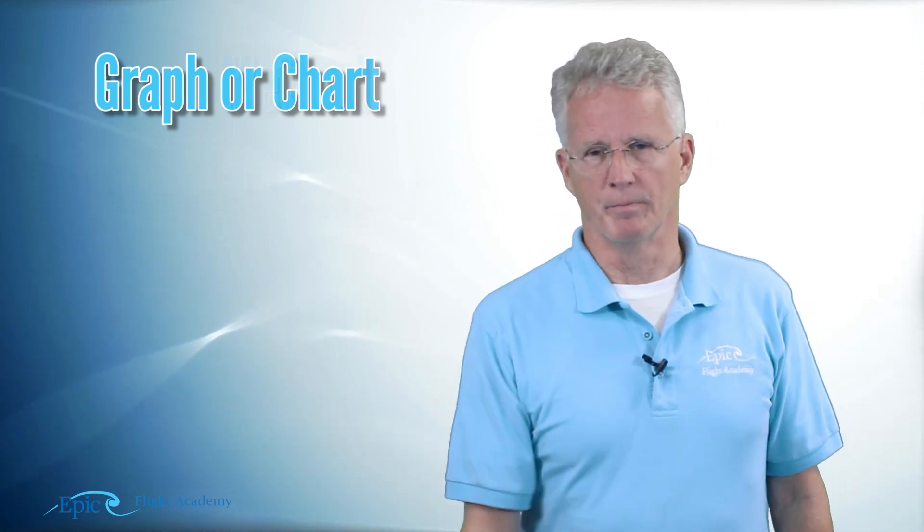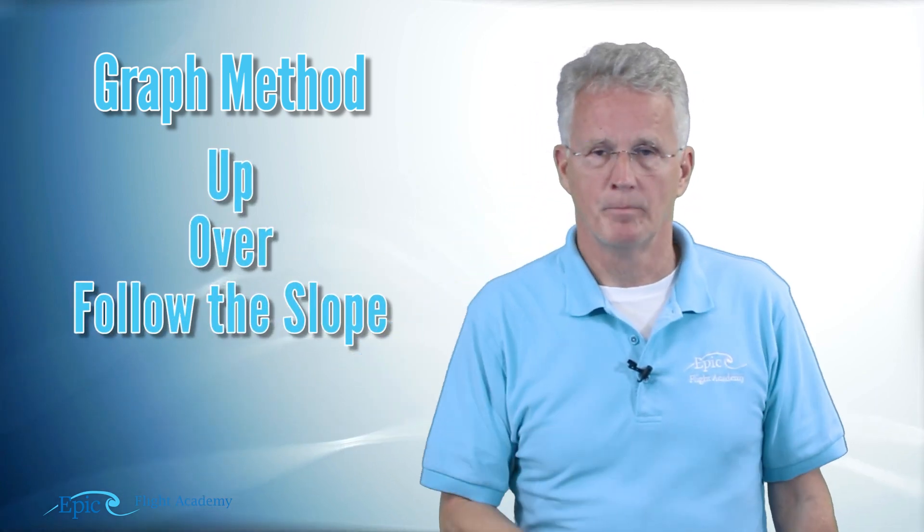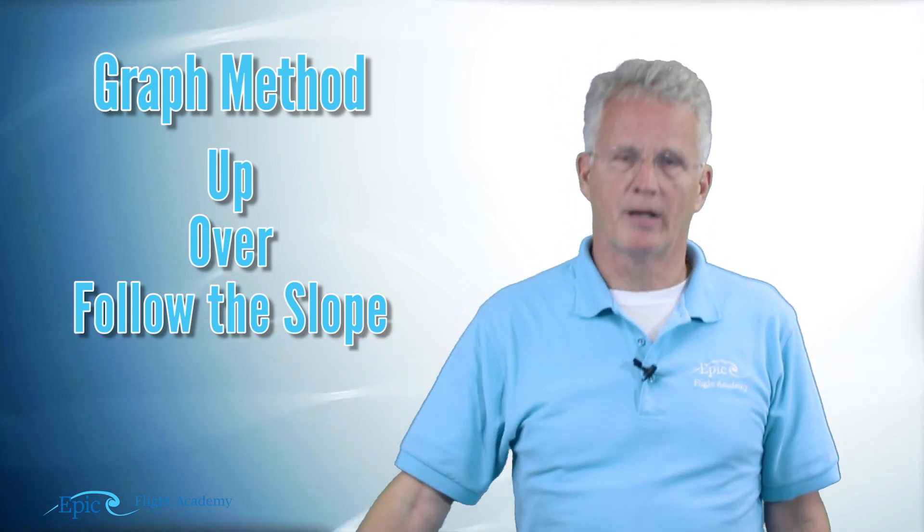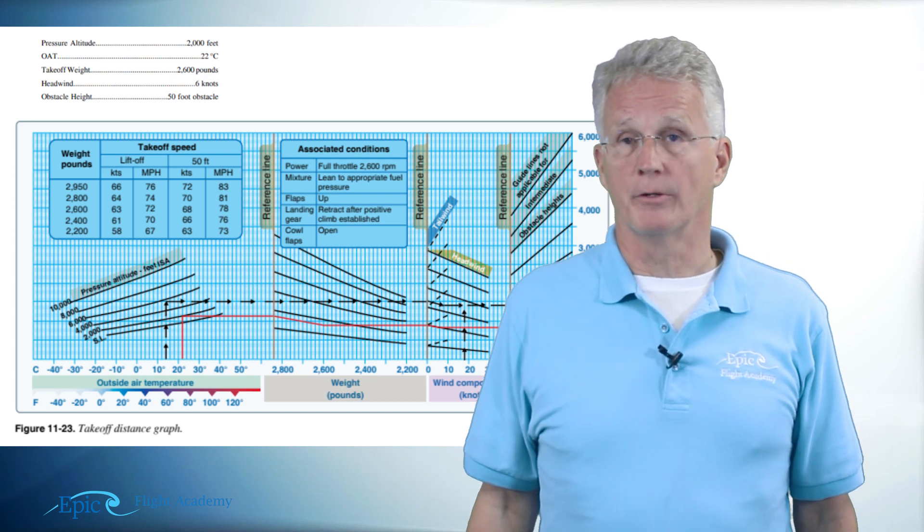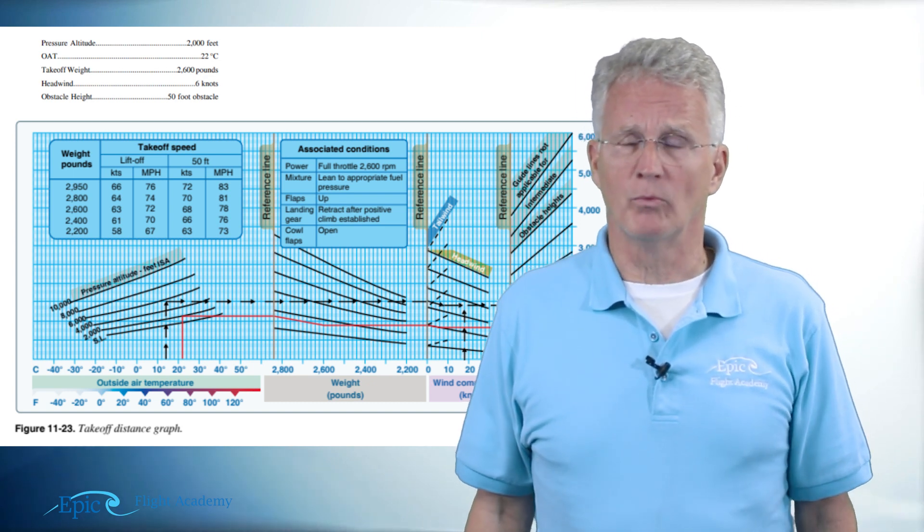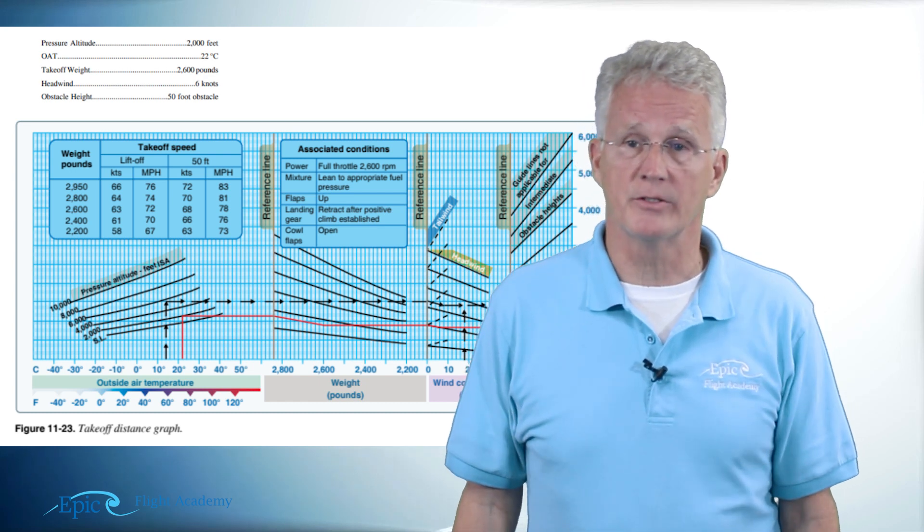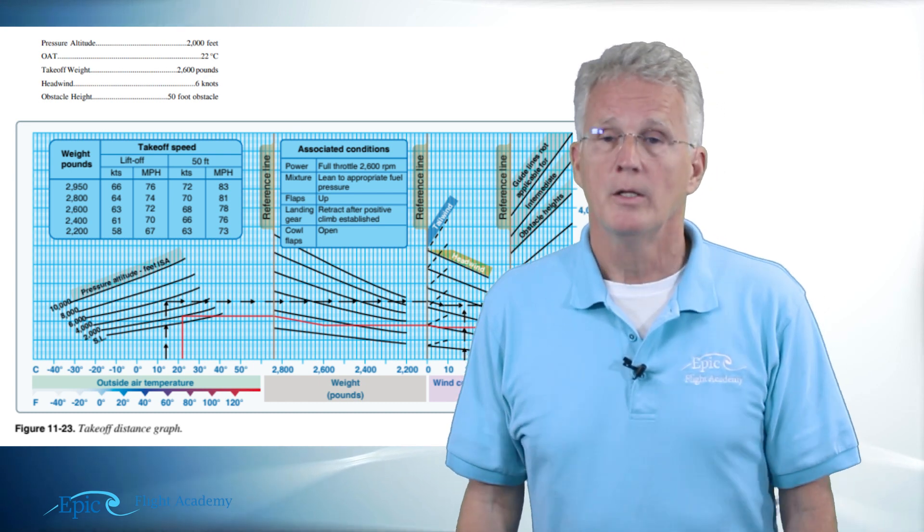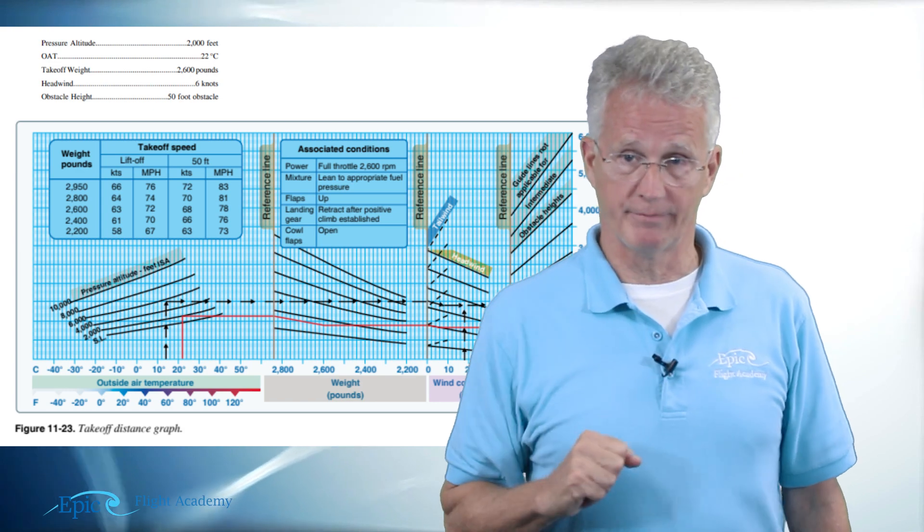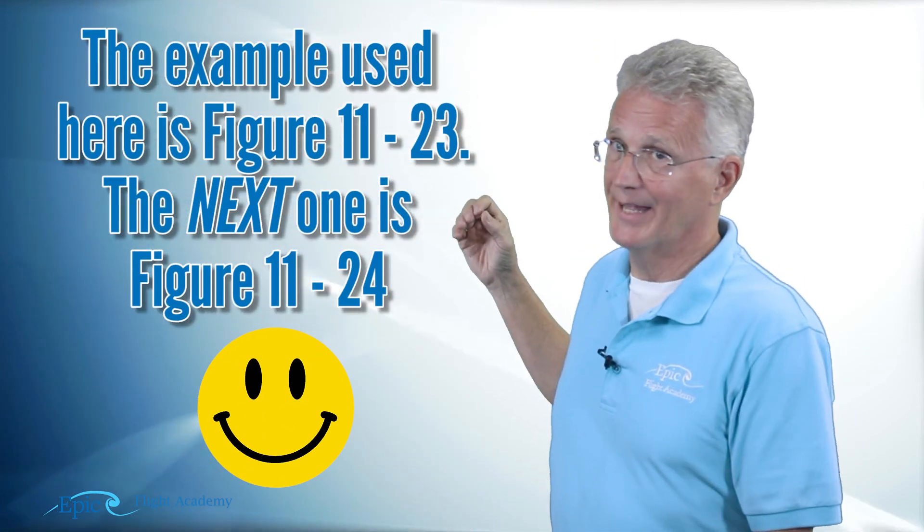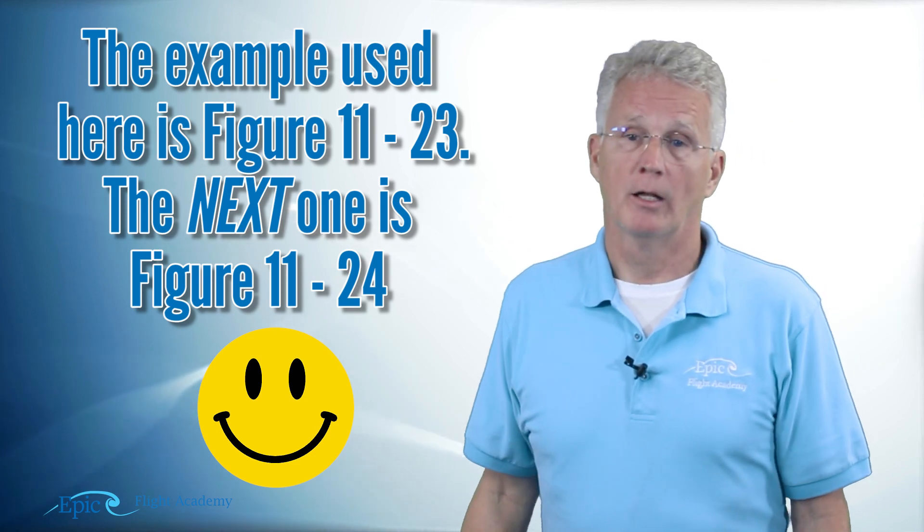Let's start with the graph form. When we do the graph method I want you to think up, over, and follow the slope. On the screen behind me you can see an example of a graph type performance chart. This example we're using is from the PHAK, the Pilot's Handbook of Aeronautical Knowledge, 8083-25B Chapter 11, figure 11.24.